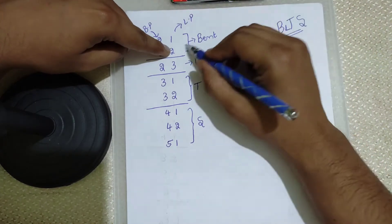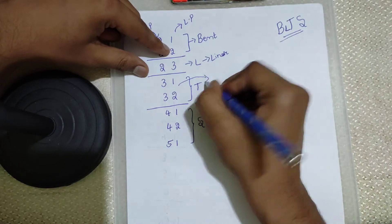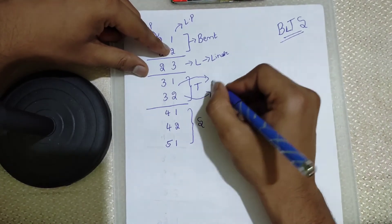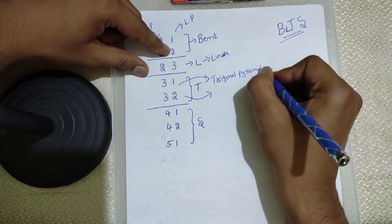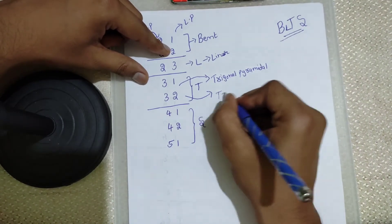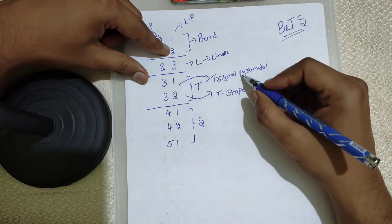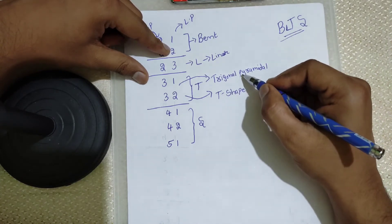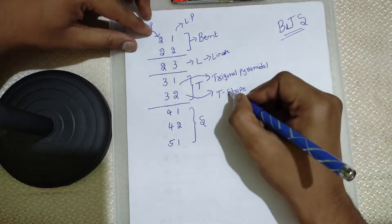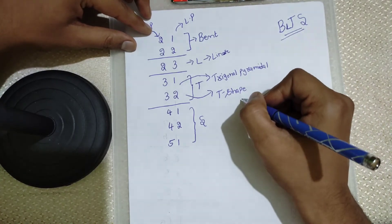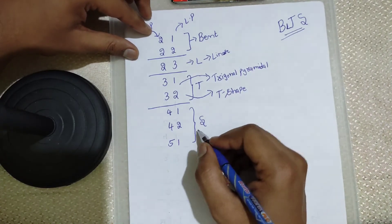T has two sub-shapes: first is trigonal pyramidal, and the second is T-shaped. To remember the order — which comes first, pyramidal or T-shaped — look at the English alphabet: P comes before S (P, Q, R, S). So first comes trigonal pyramidal, then T-shaped.